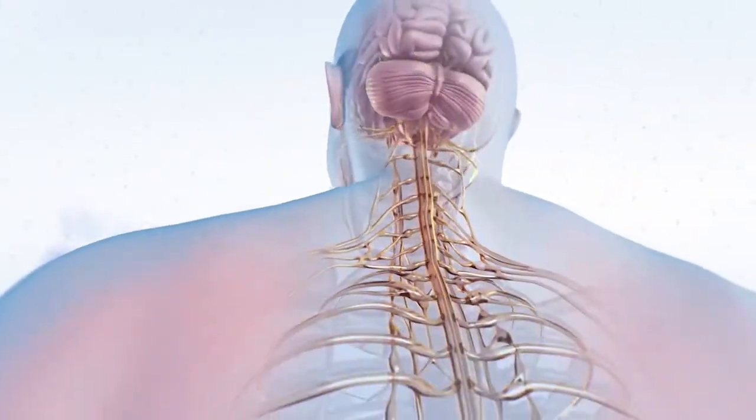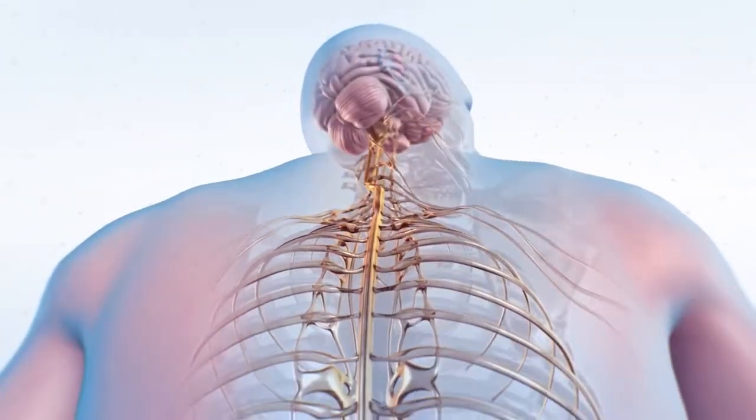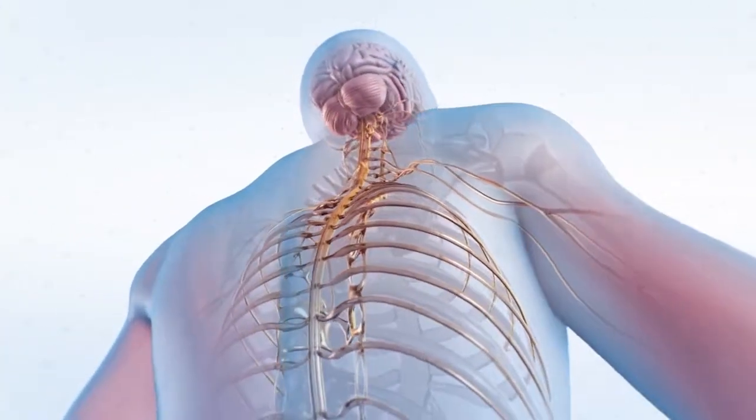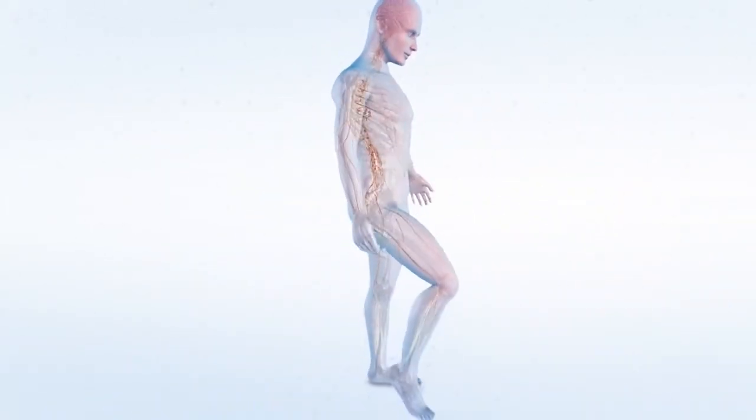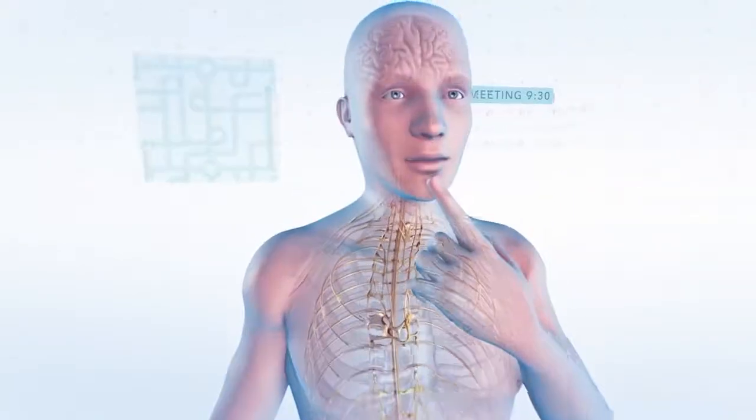Multiple sclerosis is a disease that impacts the brain and spinal cord, which make up the central nervous system that controls everything we do, whether it's taking a physical step or solving a complex problem.